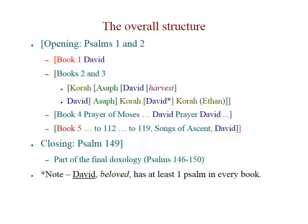Book 5 ends with David. Books 2 and 3 are organized in a series of concentric circles: Psalms of Korah, then Asaph, then Psalms of David, followed by a central section on harvest — Psalms 66 and 67 — followed by Psalms of David, then Asaph and Korah in reverse order, and then a couple of extra psalms.